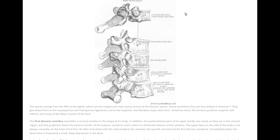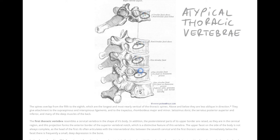So there you have it, atypical thoracic vertebrae. That's T1, T9, T10, T11, T12.